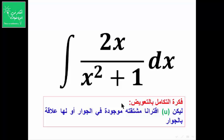فكرة التكامل بالتعويض: ليكن u اقتراناً مشتقته موجودة في الجوار أو لها علاقة بالجوار. الفكرة أن نختار البسط أو المقام ونفرض أنه يساوي u، ثم نشتقه وننظر إذا كانت المشتقة موجودة في التكامل.